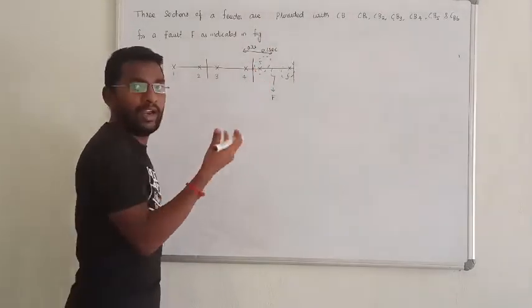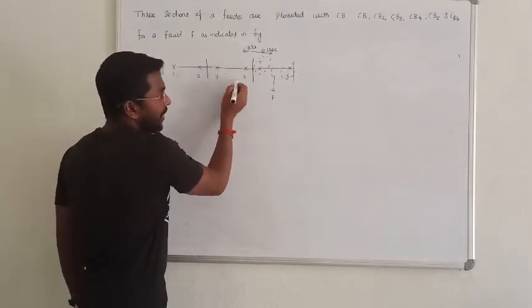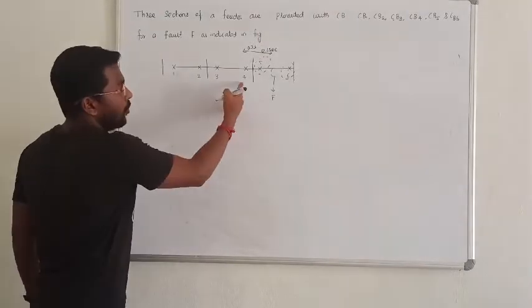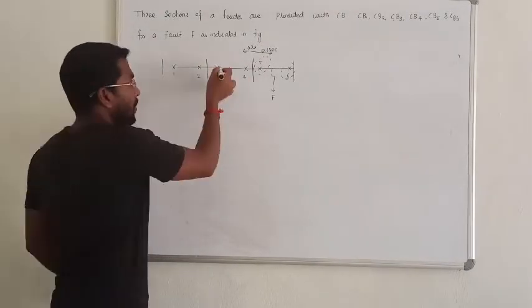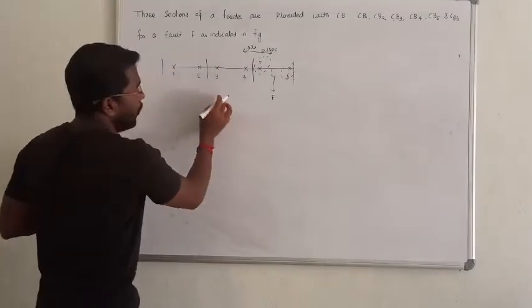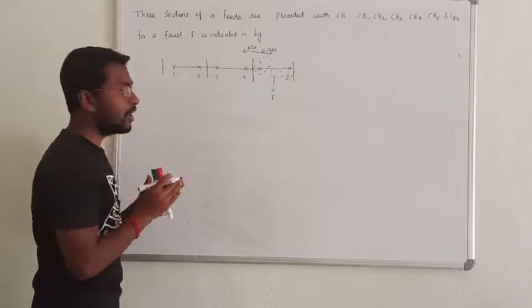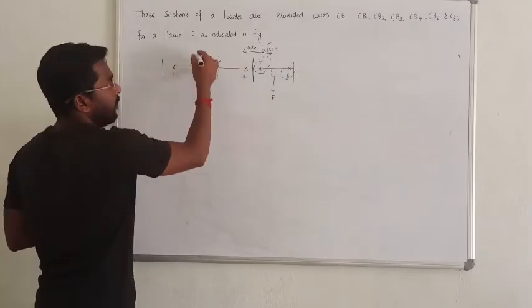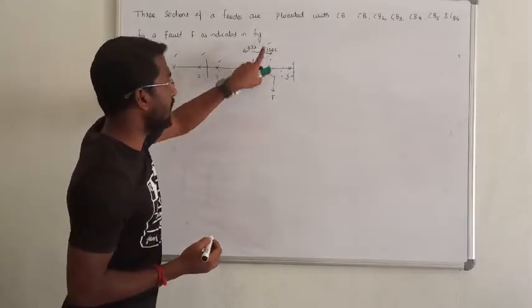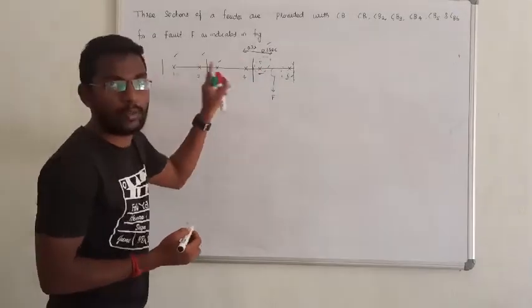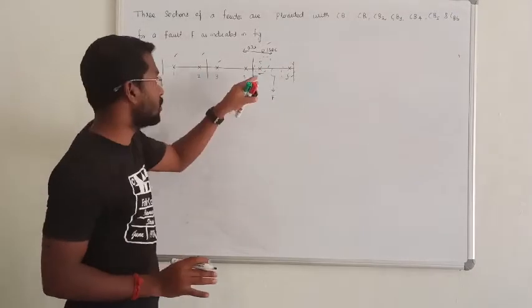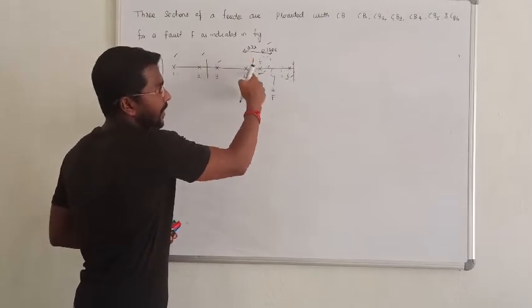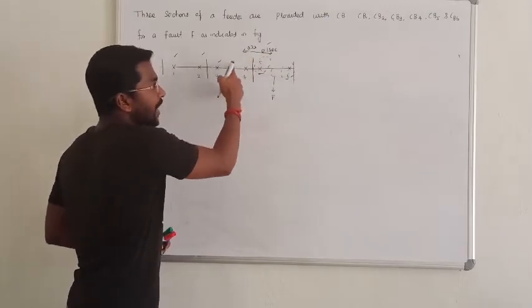If a relay fails to operate, the next relay in sequence will operate. We can set different timing for each relay - for example, the first relay at 0.1 seconds, the second at 0.3 seconds, then 0.5, 0.7, and 0.9 seconds. This creates a sequential operating system where each relay has its own assigned timing.